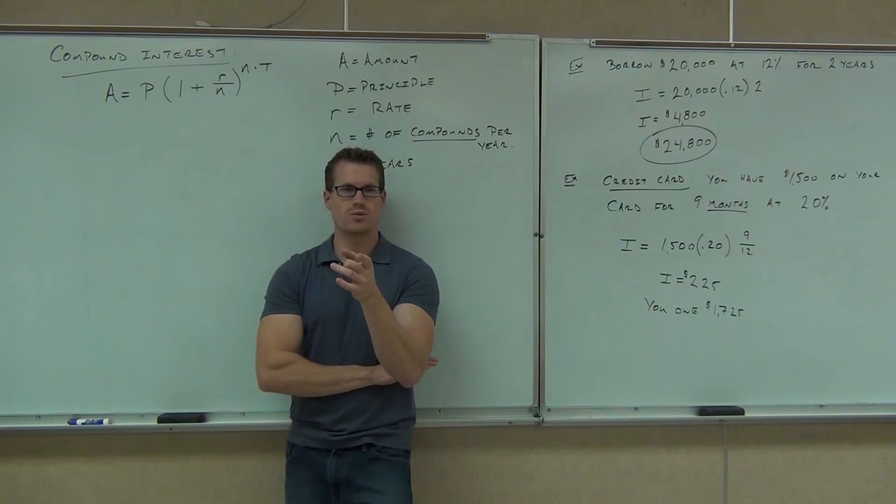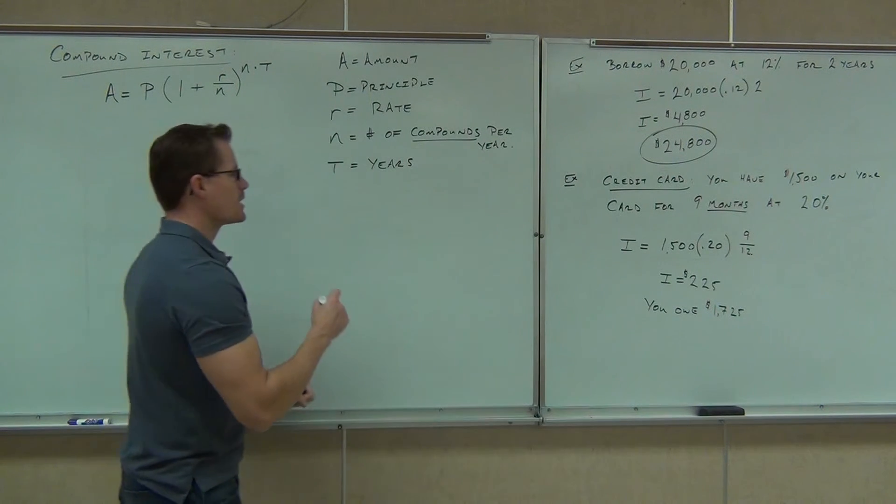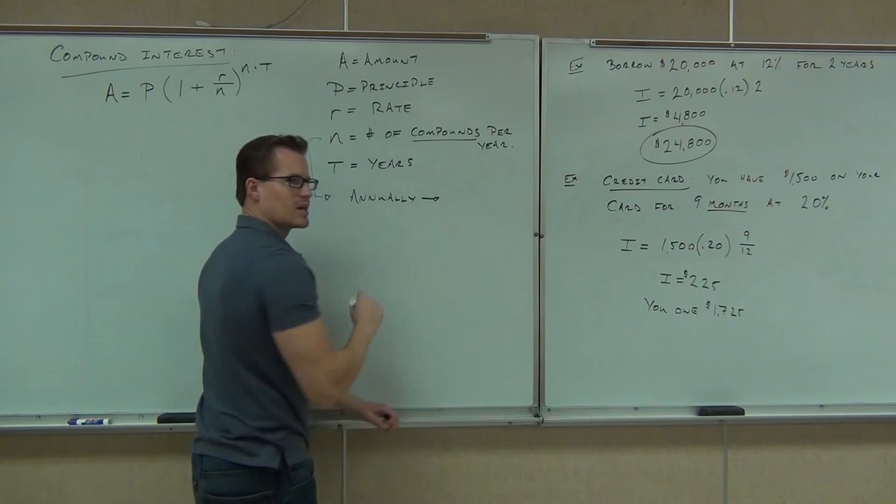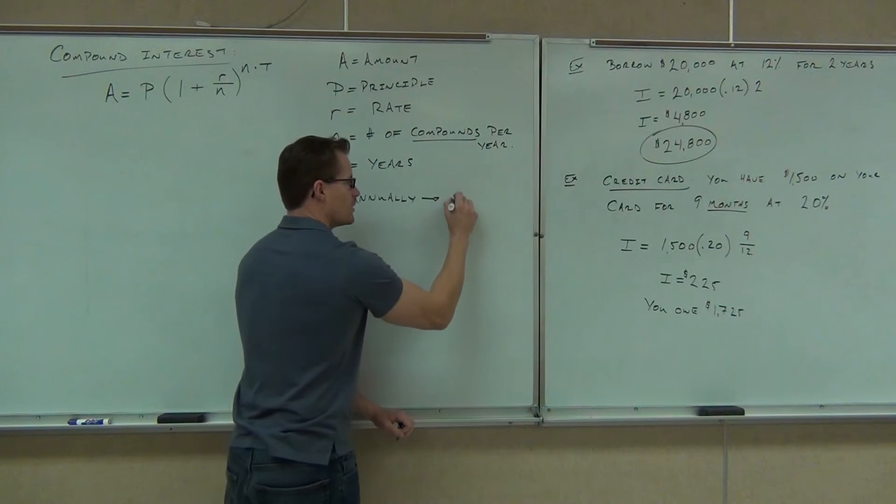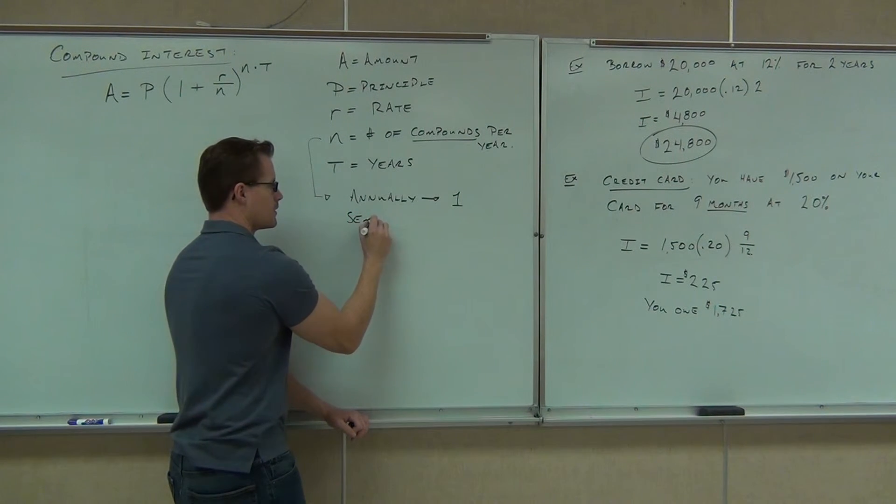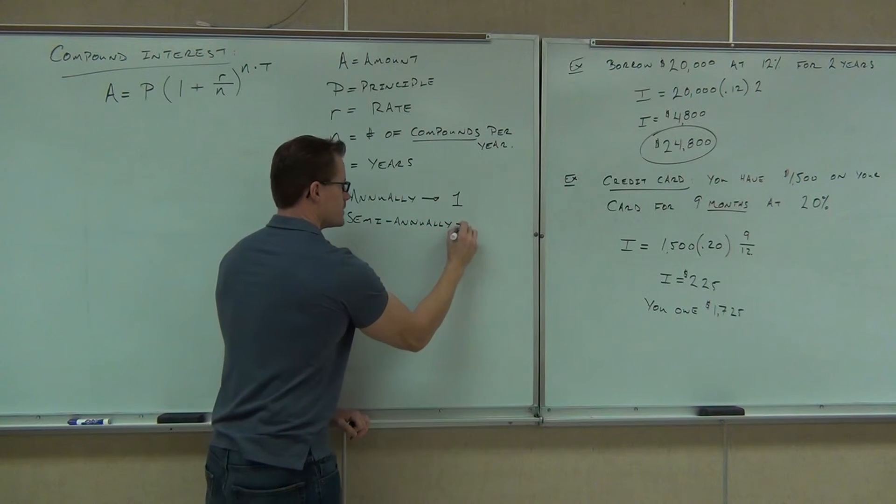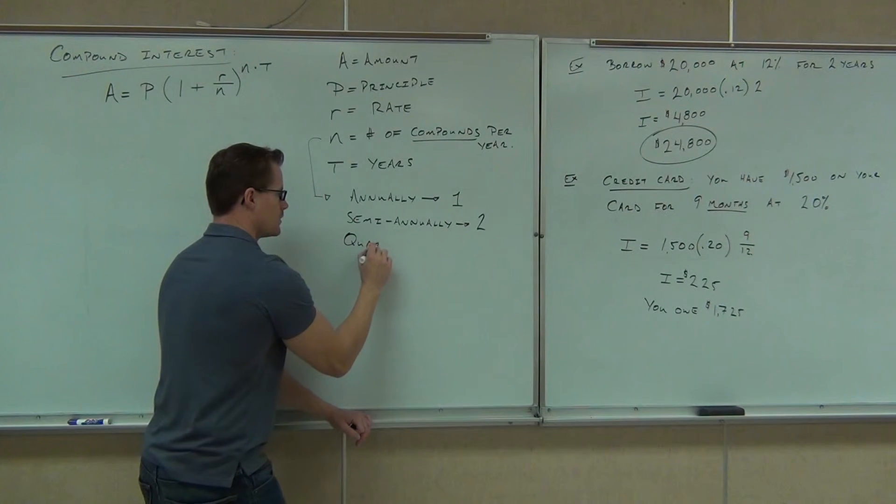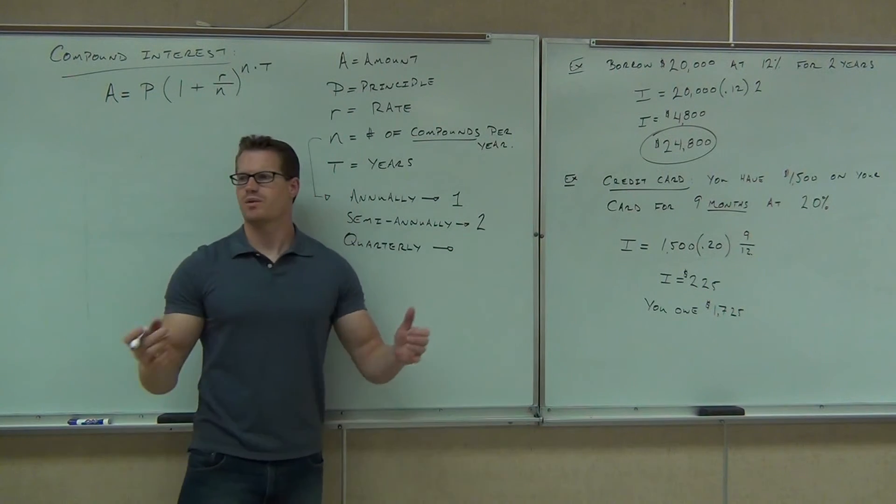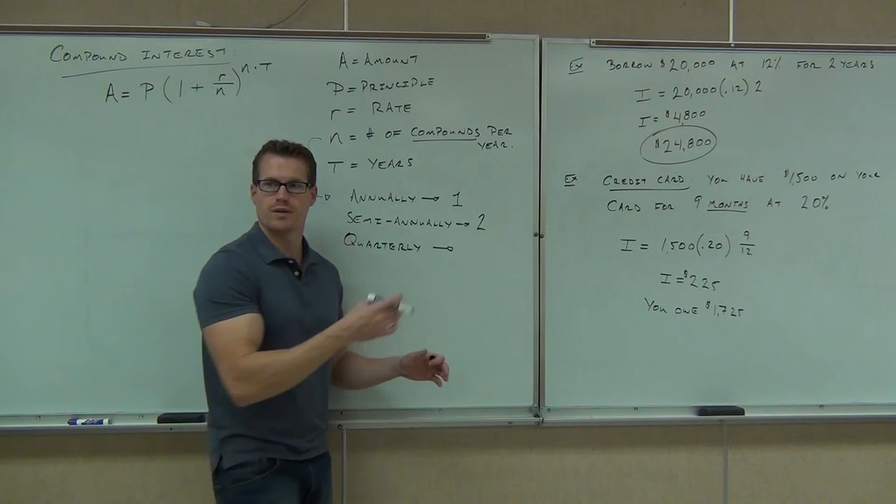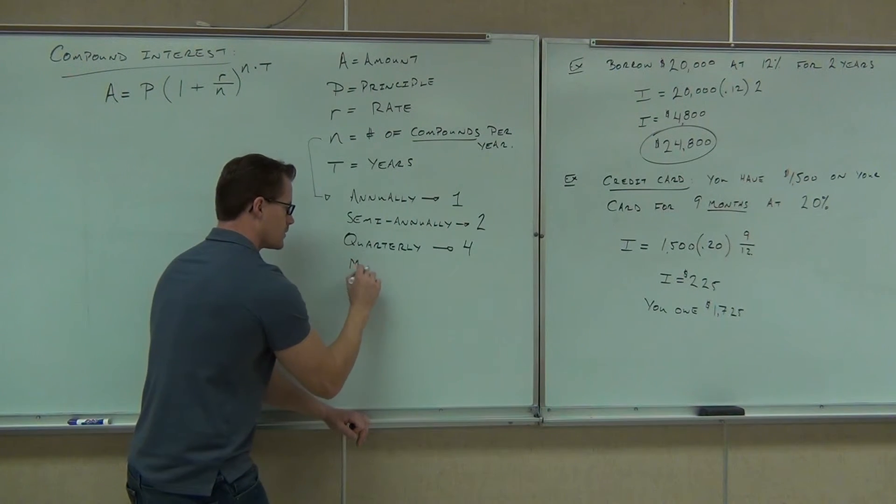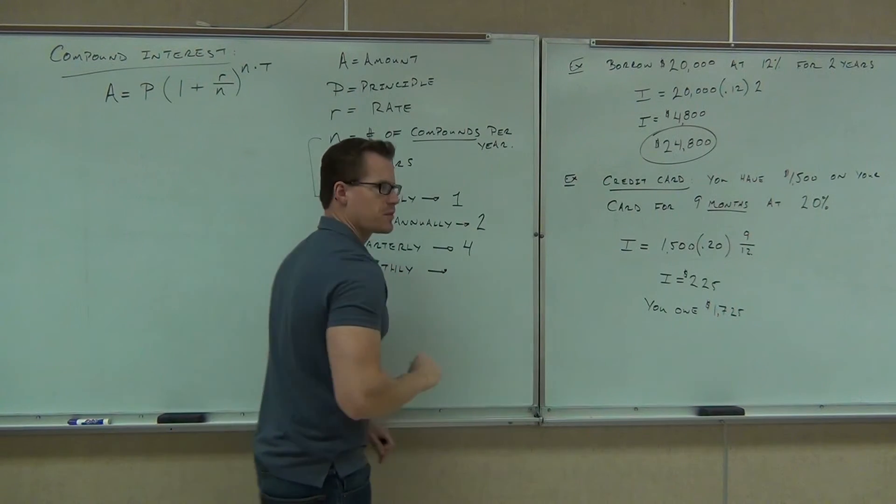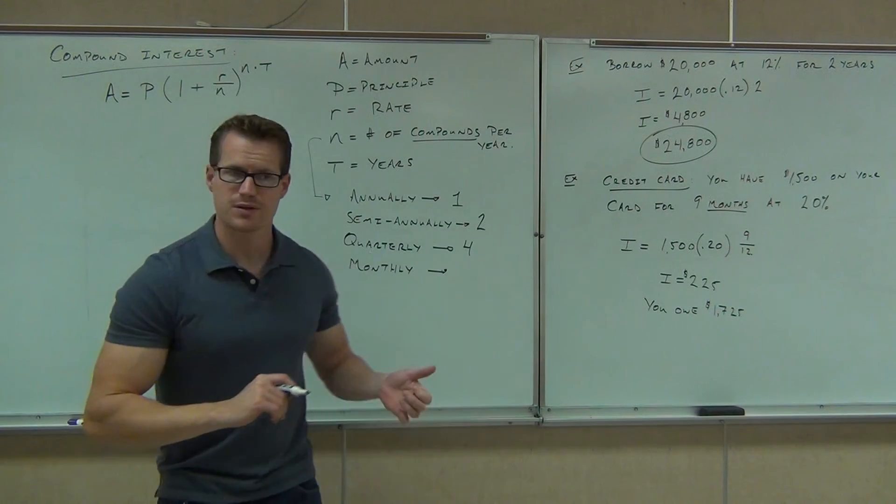So you need to write this down or have it memorized. Both, actually, because I'm not going to give it to you on the board. Here's the different number of compounds. If you get something annually, Christmas comes annually. That means you get it one time a year. Semi-annually means you get something twice a year. Quarterly, same thing like with a dollar. How many quarters are in a dollar? Then there's four quarters in a year. That would be four, four times a year. Monthly means you get interest tacked on every single month. There are 12 months in a year. So your N would be 12.